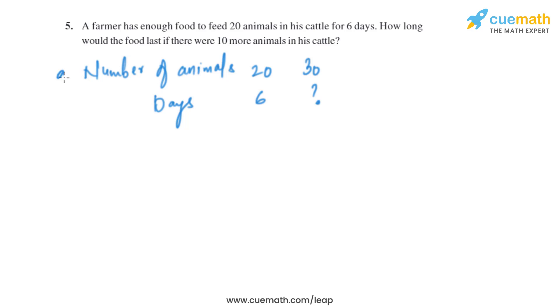Now let's take number of animals as a and days as b. So a is inversely proportional to b. We know that a equals to k multiplied by 1 by b, where k is any constant, and k will equal to a multiplied by b.